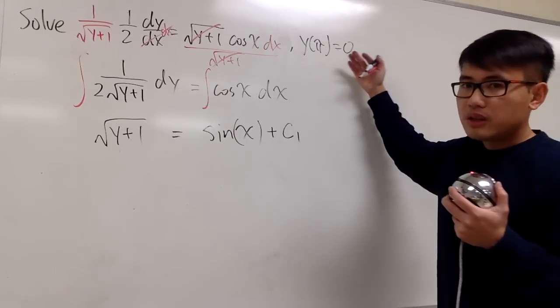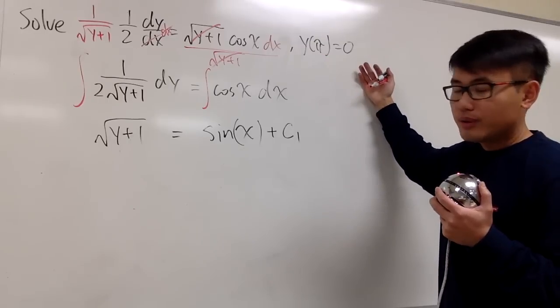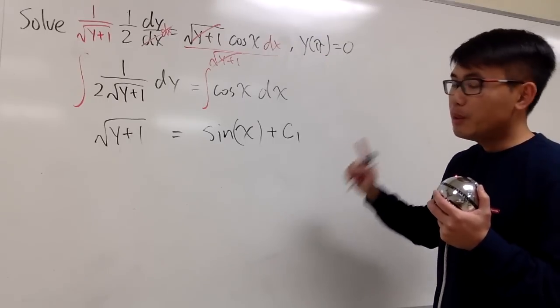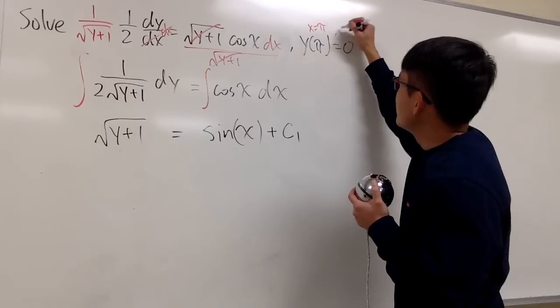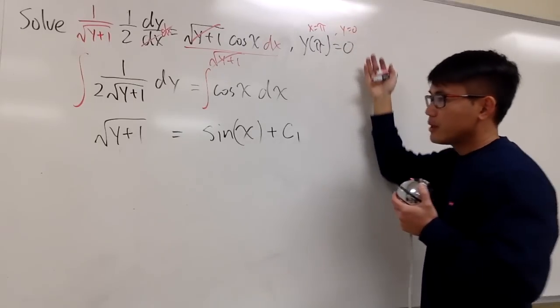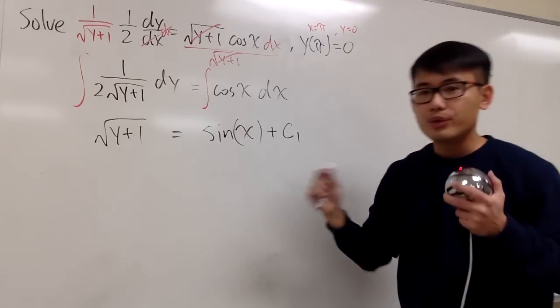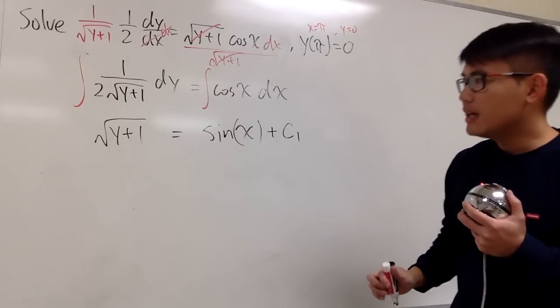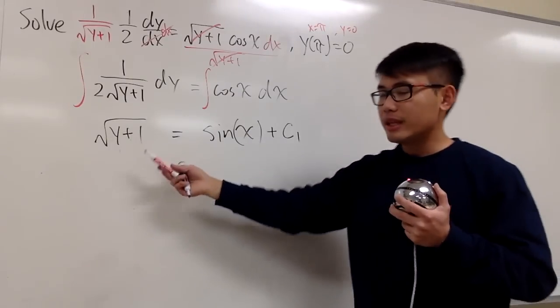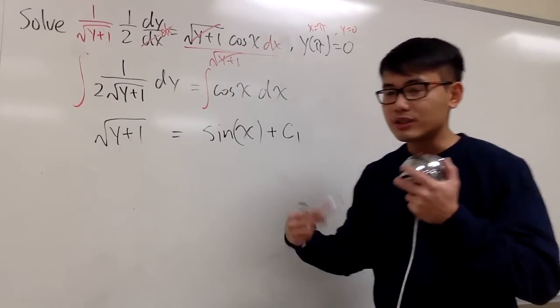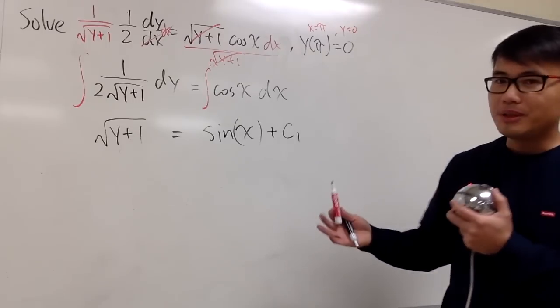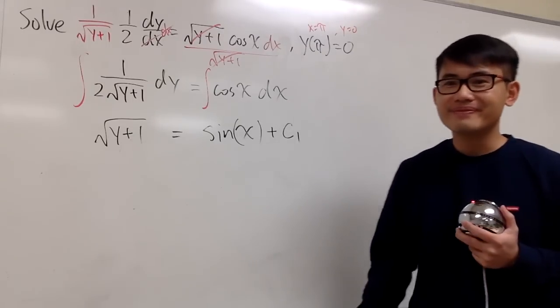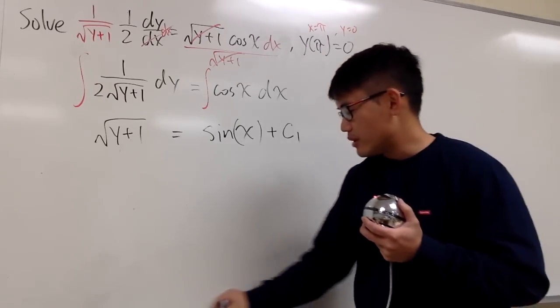And because we're given this initial value, in this case, I would like to plug in x is pi, and that will give us y will be 0. I would like to plug in these values right here to solve for c. It's because if you isolate the y first, and then you want to solve for c later on, you wouldn't know if c should be positive or negative.